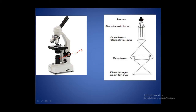This light passes through the condenser lens. Light comes from the lamp and goes to the condenser lens, and from there it goes toward the objective lens. This is the stage — you will have your slide here, and in that slide you will have your specimen. Through that, the light will pass and go to the objective lens.